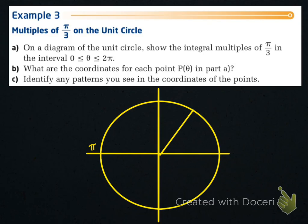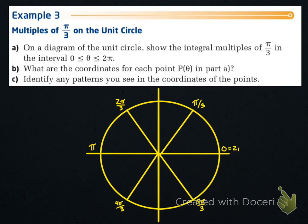In example 3, we look at the multiples of π/3 on the unit circle. We show the integral multiples of π/3 in the interval from 0 to 2π, finding coordinates for each point P(θ). The angles are π/3, 2π/3, 4π/3, and 5π/3, with 0 being the same as 2π, or 6π/3.